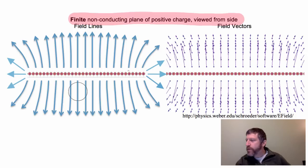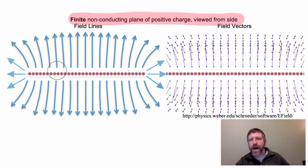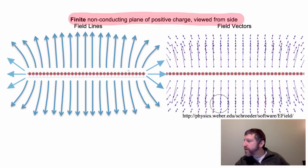When you get out to the edges, you can see the field is not so uniform. It obviously pushes away from the charges, so the field lines tend to spread out. The field vectors show the same kind of thing.